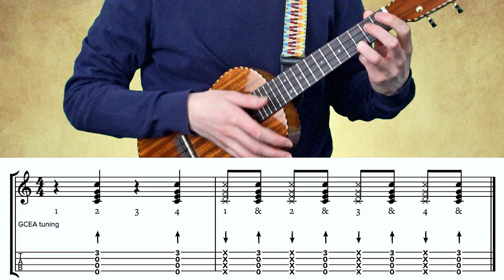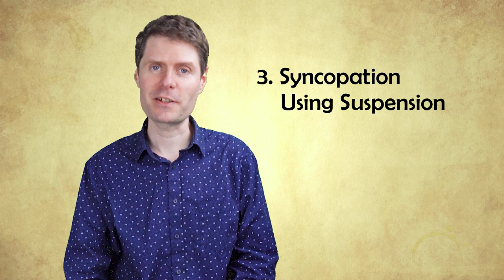Number three: syncopation using suspension. Hiding strong beats by holding previous notes longer creates the illusion of a missed beat. On the uke, this is done by letting the weak beat note or chord ring longer over the following strong beat. Sheet music uses ties to show when to hold the notes longer, connecting two notes together to indicate combined length. Here is an example of syncopation using suspension, with suspended notes marked in purple. Notice that I have also highlighted the second beat of the second bar because it sustains over the stronger third beat.